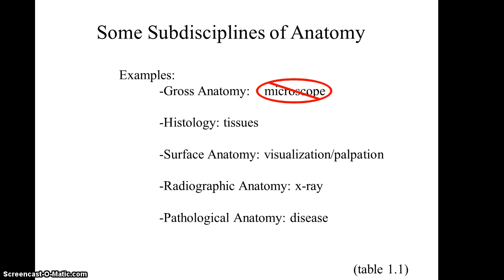Some sub-disciplines of anatomy include gross anatomy, which means pretty much anything you can see with your own eyes — nothing that's microscopic or smaller. There's histology, which is the study of tissues; in this case you would need a microscope to understand the various tissues of the body. There's also surface anatomy, which is the anatomy that the family physician or primary care physician would investigate through visualization — what you can see with your eye — and palpation, which is what you can touch.